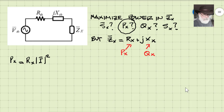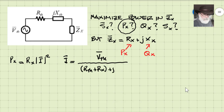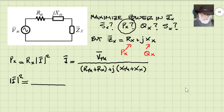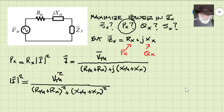Let's write the active power in Zx, which is the power in Rx: Rx times I squared. We need the current in the circuit, given by Ohm's law — Vth divided by the total impedance. We don't need the current itself; we need the square of its RMS value. That is Vth_rms squared divided by the square of the absolute value of the total impedance: real part squared plus imaginary part squared.